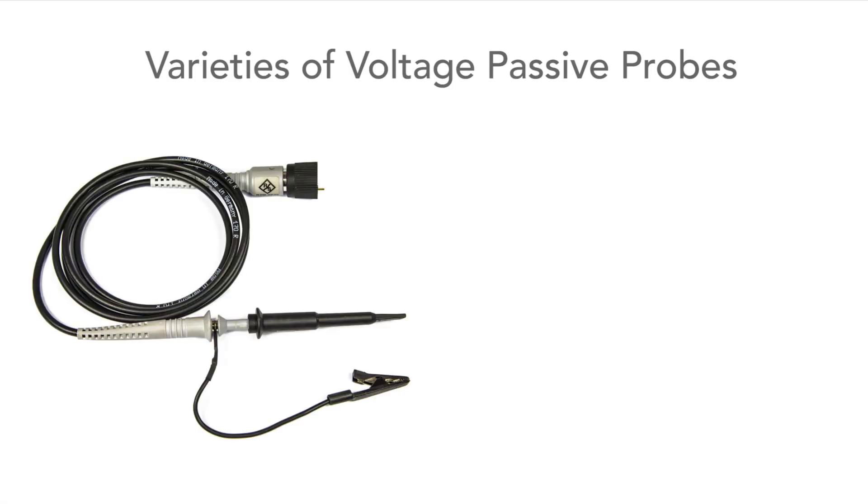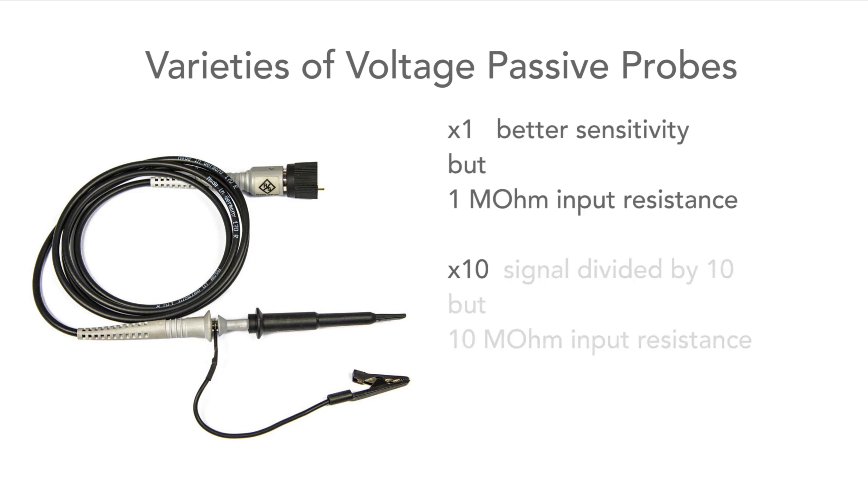This type of probe comes in two main varieties: there's what's called a times one probe and there's also a times ten. The times one gives you better sensitivity but a one megaohm input resistance, or there's the times ten that gives you a ten megaohm input resistance but it reduces the signal by a factor of ten.